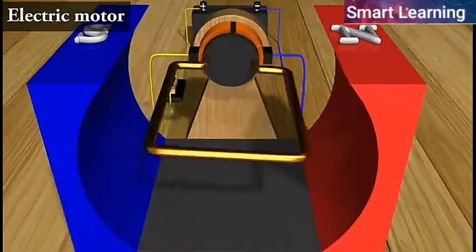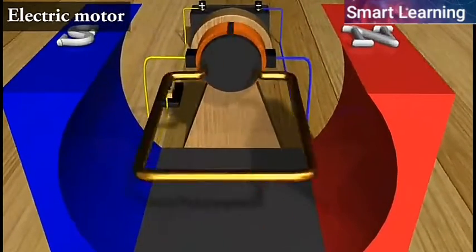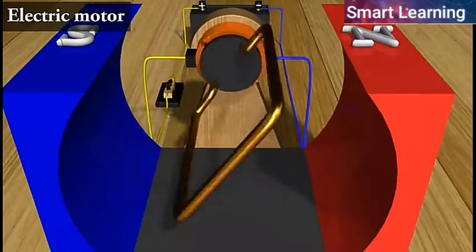Thus, the coil and the axle O, mounted free to turn about an axis, rotates anti-clockwise.